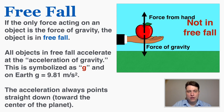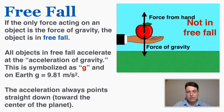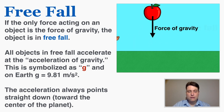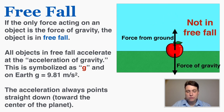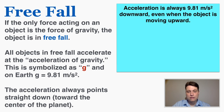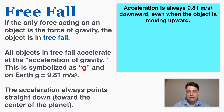An important thing to remember about the acceleration of gravity is that it is always accelerating everything straight down at 9.81 meters per second squared, even when the object itself is moving upward. Even if it's moving up, gravity is pulling it to a stop and then pulling it back down. If I were to draw a map of the acceleration at different points along its path, it's always going to be exactly the same — always 9.81 downward.